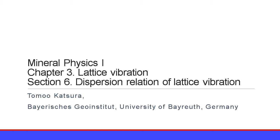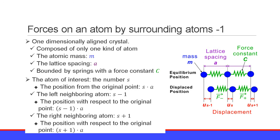Section 6 of Chapter 3, Lattice Vibration, is about the dispersion relation of lattice vibration. Let us consider a one-dimensionally aligned crystal composed of only one kind of atom. The atomic mass is m and the lattice spacing is a.